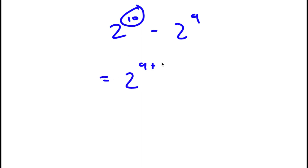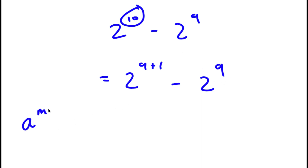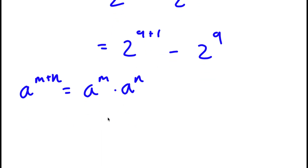So now I have 2 to the power of 9 plus 1 minus 2 to the power of 9. If I have something in the form a to the power of m plus n, this is equal to a to the power of m times a to the power of n. So in this case, 2 to the power of 9 plus 1, I can rewrite as 2 to the power of 9 times 2 to the power of 1.